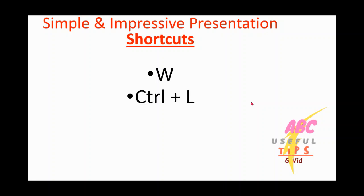Next: Ctrl+L. When you're presenting, a lot of times you'd like to have a laser pointer. You don't need a separate laser pointer — just press Control and L at the same time and your cursor will turn into a laser.